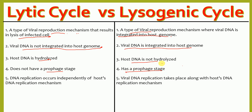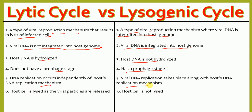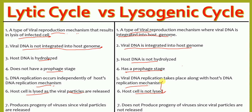In the lytic life cycle, there is no prophage stage, whereas the lysogenic life cycle has a prophage stage. DNA replication in the lytic cycle occurs independently of the host replication mechanism, but in the lysogenic life cycle, viral DNA replication takes place along with the host replication mechanism. In the lytic cycle, the host cell is lysed and viral particles are released; in the lysogenic life cycle, the host cell is not lysed and progeny viruses are not produced.